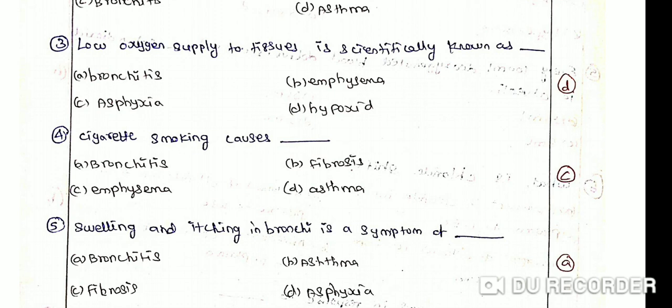The correct answer is a chronic disorder in which alveolar walls are damaged due to which respiratory surface is decreased. This is one of the causes of cigarette smoking.